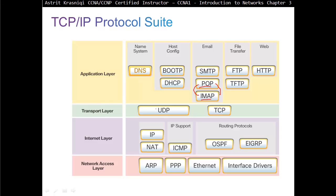At the transport layer we have two protocols: UDP and TCP. UDP is an unreliable protocol while TCP is a reliable protocol. UDP has its place for applications that need fast data transfer — for example, Voice over IP. They can tolerate a little bit of packet loss; it's better to lose packets than to try resending them and creating delays. So delay-sensitive applications require UDP protocol.